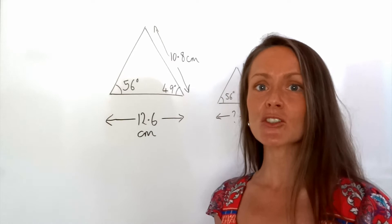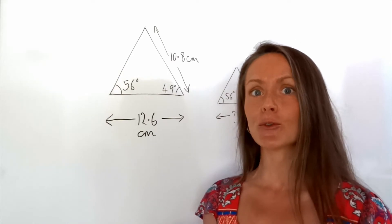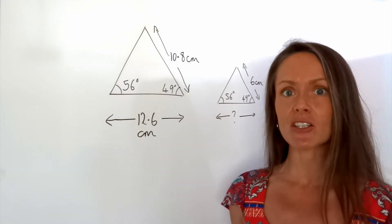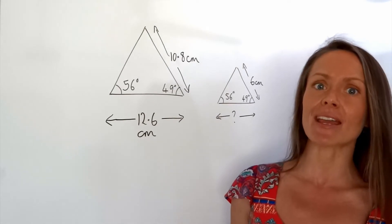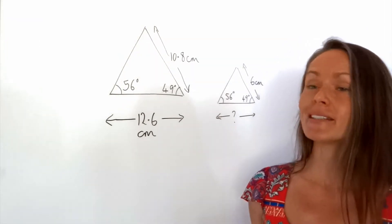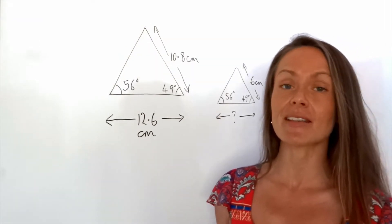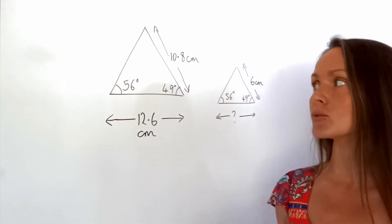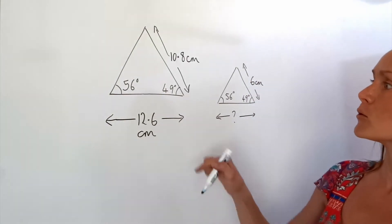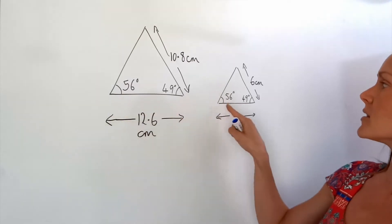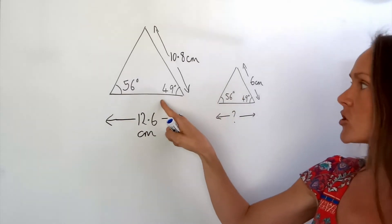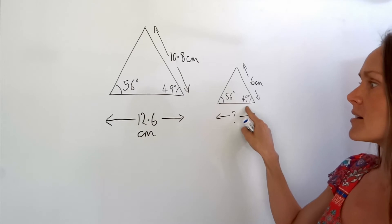Hey guys, today I'm going to show you how to find missing legs when you're presented with similar shapes. Similar shapes are essentially the same shape but different sizes and they have identical angles. I can see here I've got two similar triangles because the angles are the same, but this one is larger than this one over here.